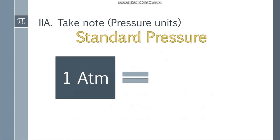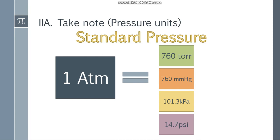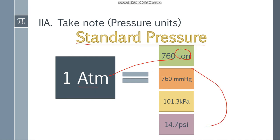Take note that we also have many pressure units. All of these are standard pressure. One atmosphere, or 1 atm, is equal to 760 mmHg (millimeters of mercury), 101.3 kPa (kilopascals), or 14.7 psi (pounds per square inch). They are all equal to each other and they are all standard pressure. This will be useful if you want to convert, say, atm to Torr or Torr to psi.